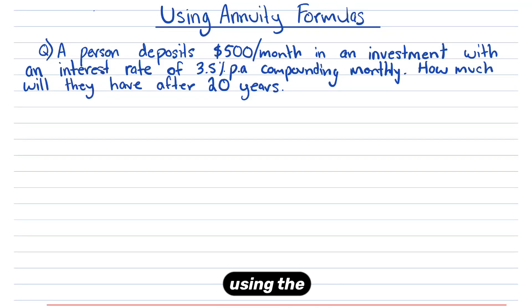Let's go through an example of using annuity formulas. For this question, a person deposits $500 per month into an investment with an interest rate of 3.5% compounding monthly. How much will they have after 20 years?